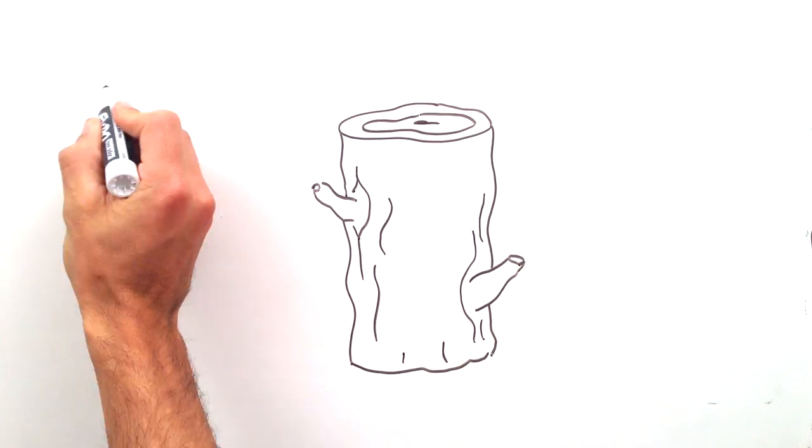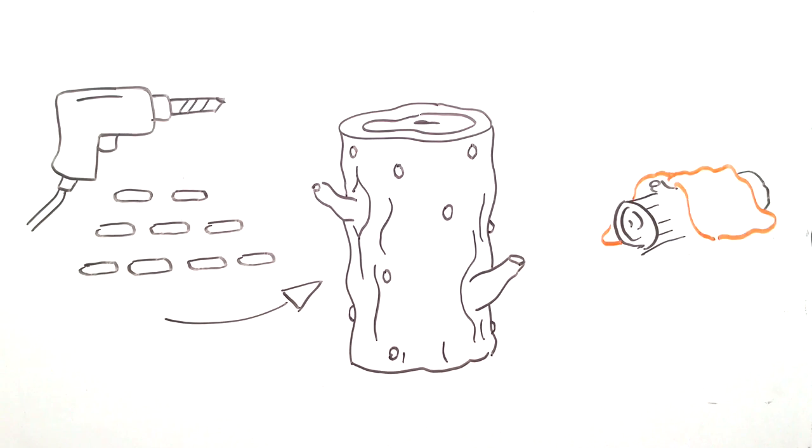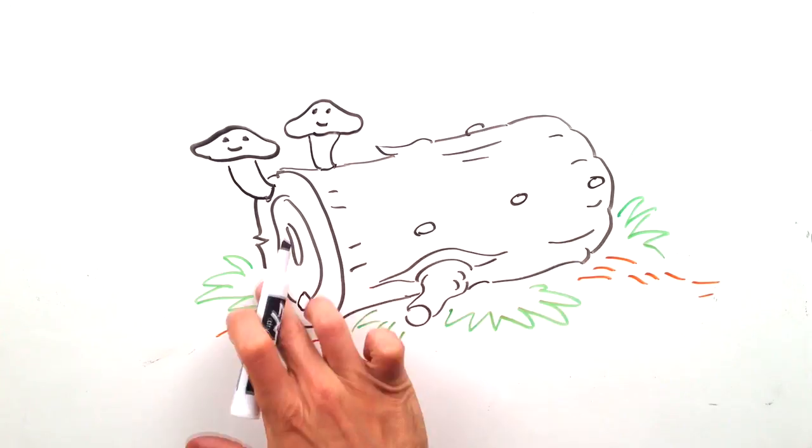You can grow your own edible mushrooms on logs. Just drill them in and keep them in dark and moist conditions. After a while, you'll have a mushroom garden.